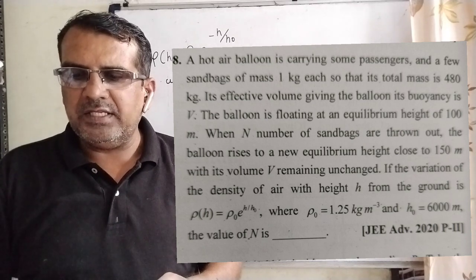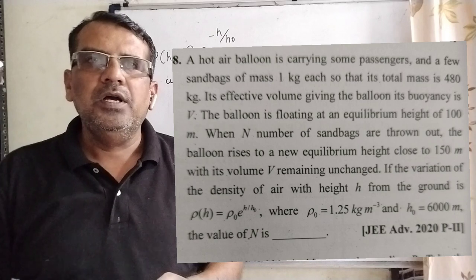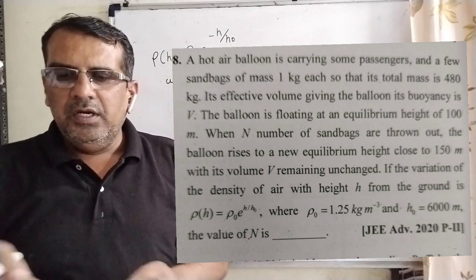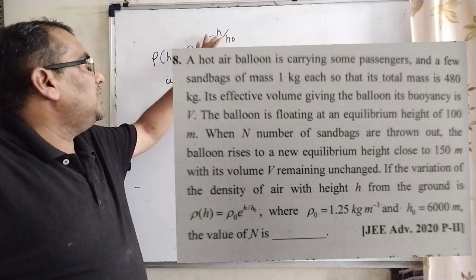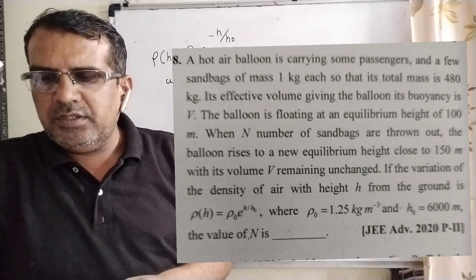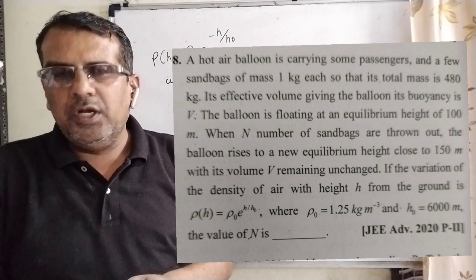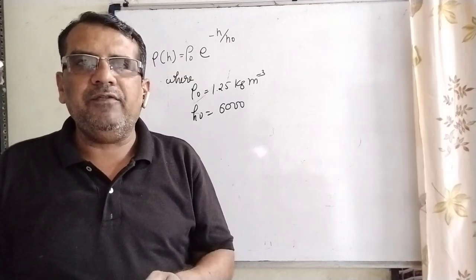If the variation of the density of air with height h from the ground is ρ(h) = ρ₀e^(-h/h₀), where ρ₀ = 1.25 kg/m³ and h₀ = 6000 m, then find the value of N.